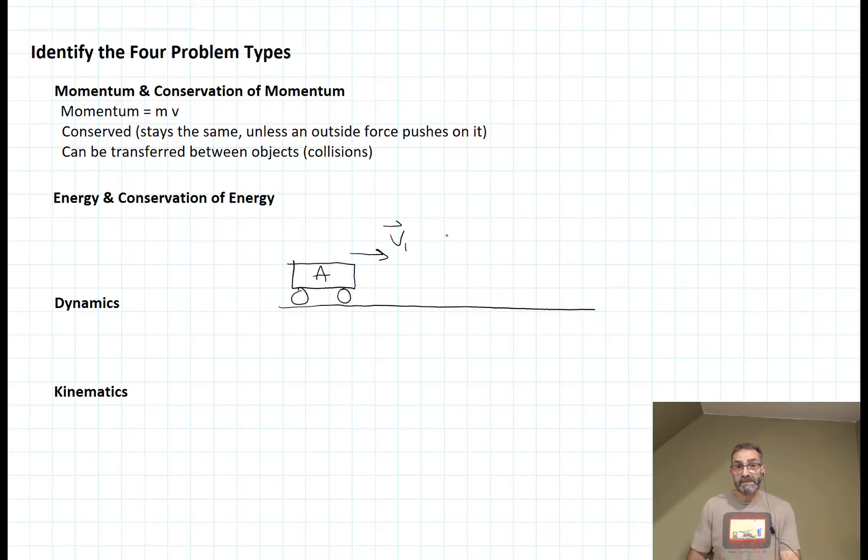Let's say we have two carts on a track. Cart A is moving with velocity v1, and cart B is at rest. After the collision, the two carts stick together and move with velocity v2. But velocity v2 has to be less than velocity v1 because the mass of carts A and B together is much more than the mass of cart A by itself.